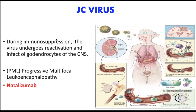Like BK virus, JC virus can undergo latency. During immunosuppression, the virus can reactivate and enter the brain to infect oligodendrocytes of our CNS — the myelinating cells of our axons that provide the myelin sheath. When oligodendrocytes are infected, this produces progressive multifocal leukoencephalopathy, or PML. This is also the problem seen in multiple sclerosis, and patients with MS may take drugs like natalizumab.